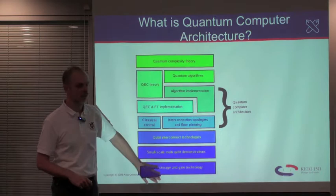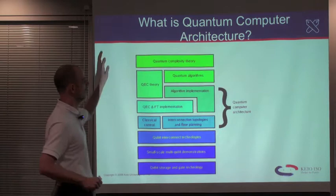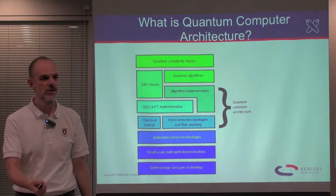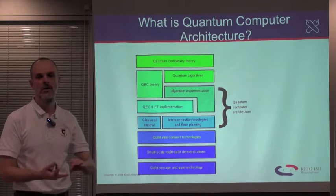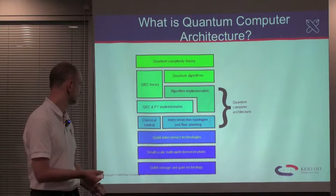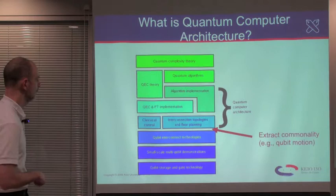What is quantum computing architecture? At the bottom, there are technologies for storing individual qubits and manipulating individual quanta. At the top, there's quantum complexity theory, telling us how long, in theory, it would take to solve certain problems using quantum computation. Getting from here to here, there's a lot of work in the middle — we call that area quantum computer architecture — including the implementations of algorithms, how quantum error correction and fault tolerance actually get implemented, the classical control, and most importantly for today's talk, the interconnect topologies and the floor planning of the overall systems.